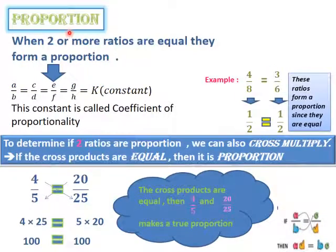And now proportion. When two or more ratios are equal, they form a proportion. For example, if these ratios a over b, c over d, e over f, and g over h are equal to k, which is constant, means a number 1, 2, 3, this constant is called coefficient of proportionality.